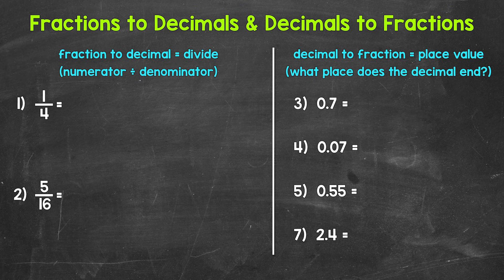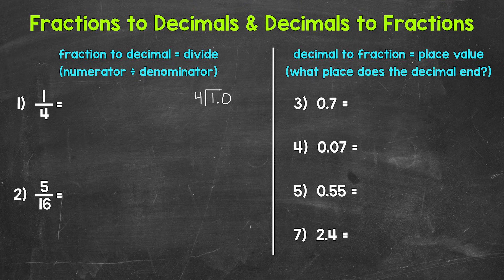So again, one divided by four. I'm going to do the division by hand in this video. Let's set this up: one divided by four. How many whole groups of four in one? Well, we can't do that, so we need to put a decimal after one and then a zero to the right of the decimal. Remember, zeros to the right of a decimal do not change the value of the number, so we're able to do this in order to work through the division problem.